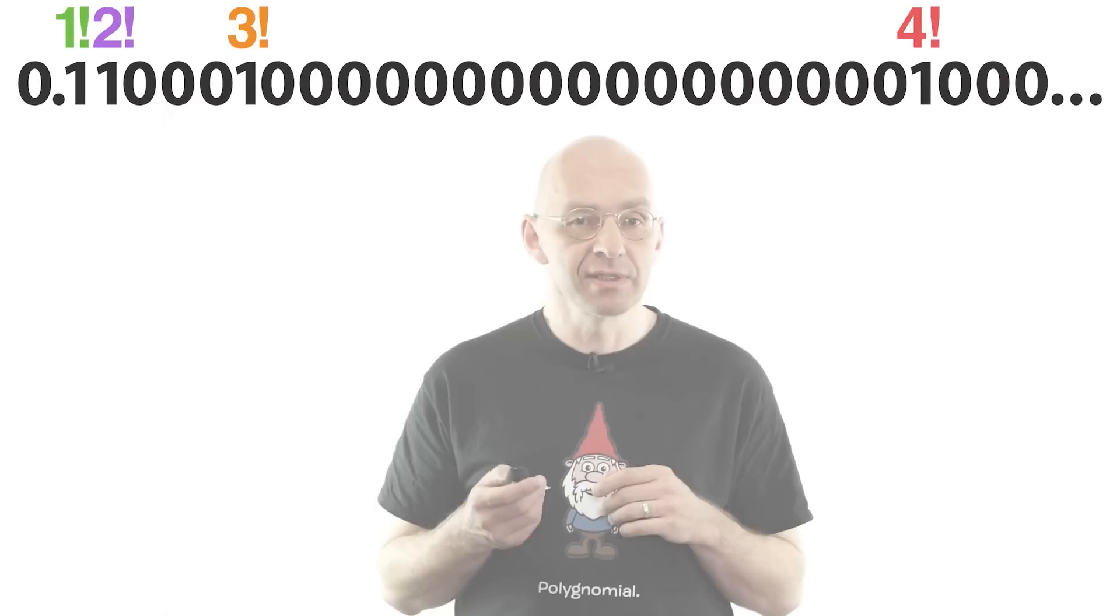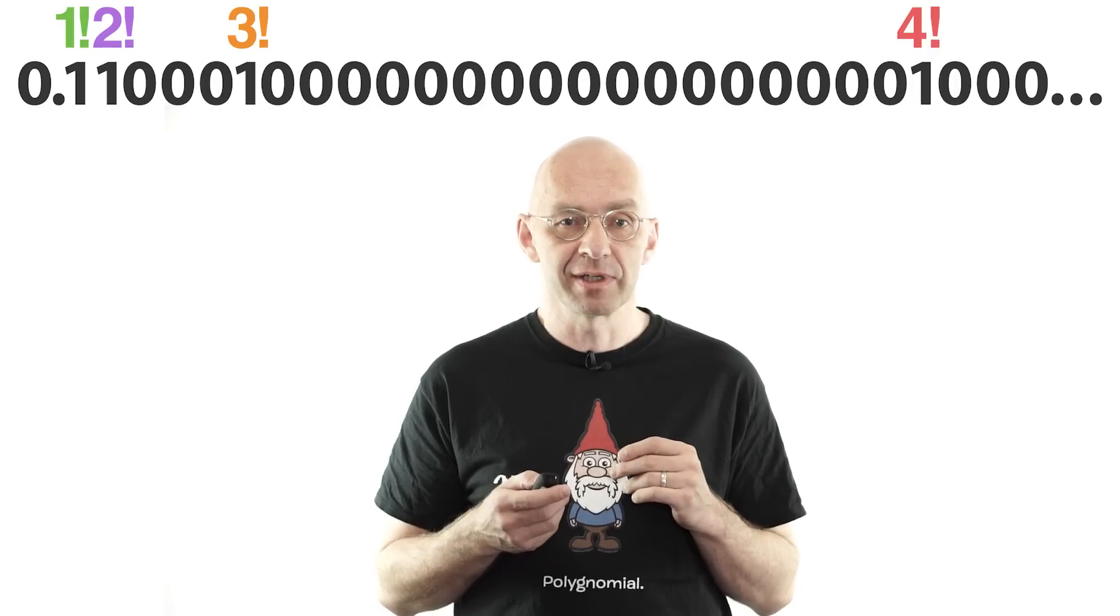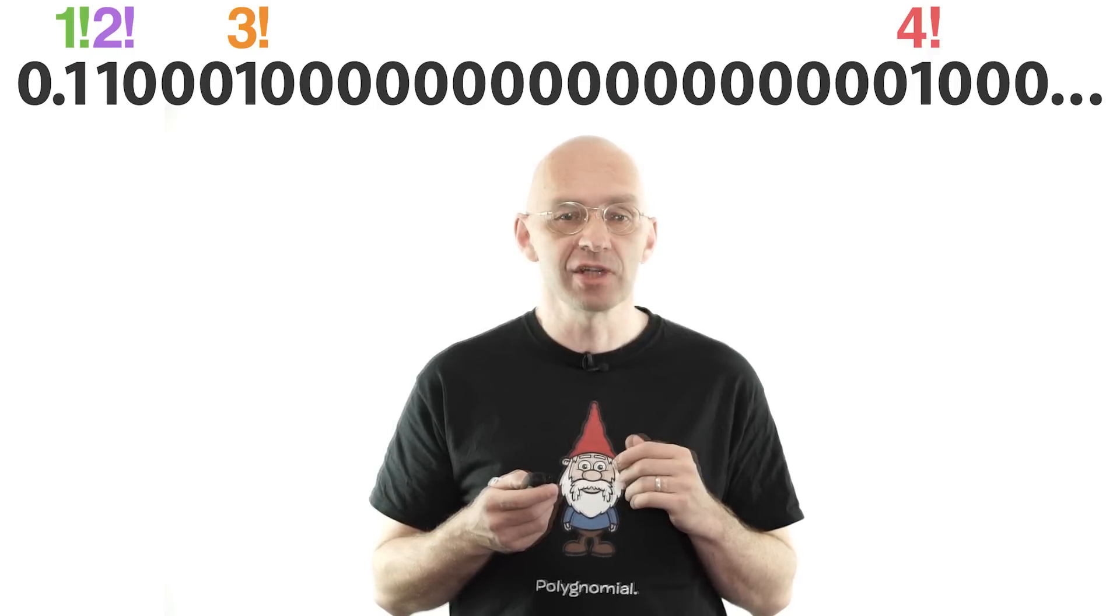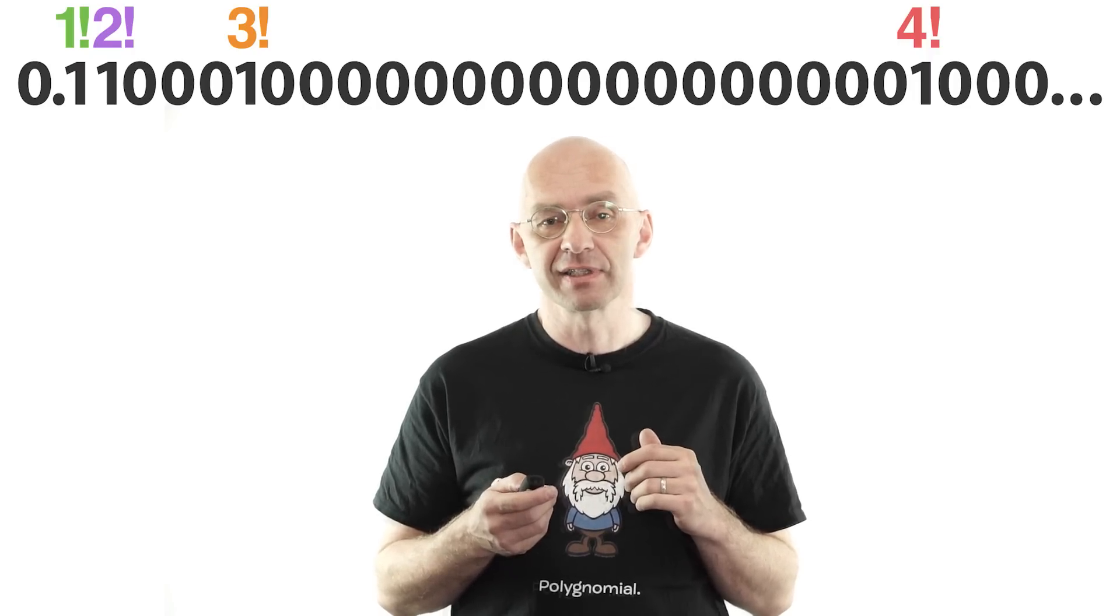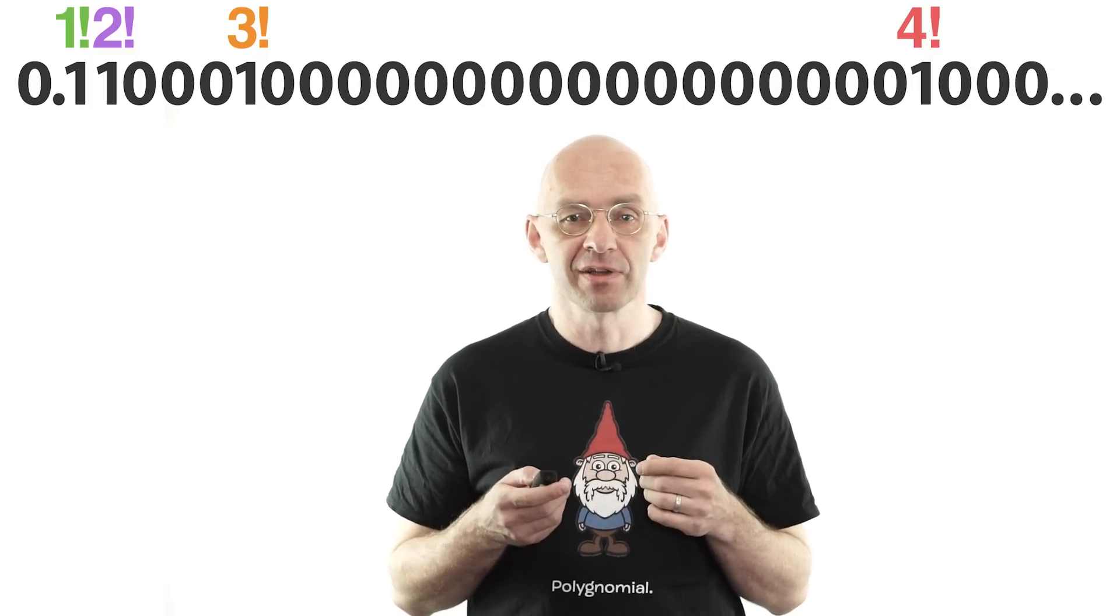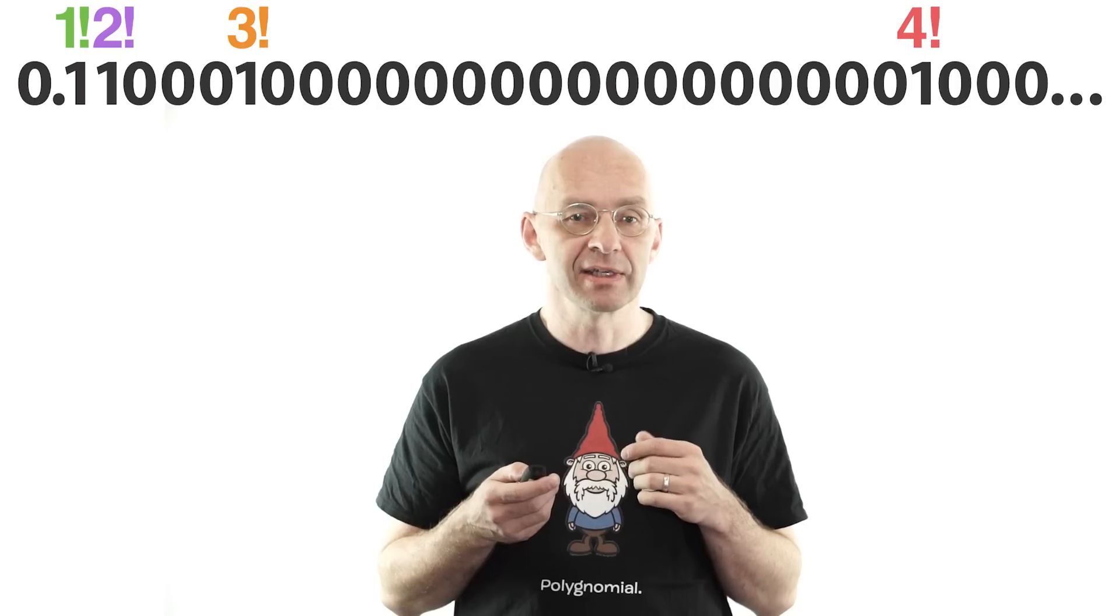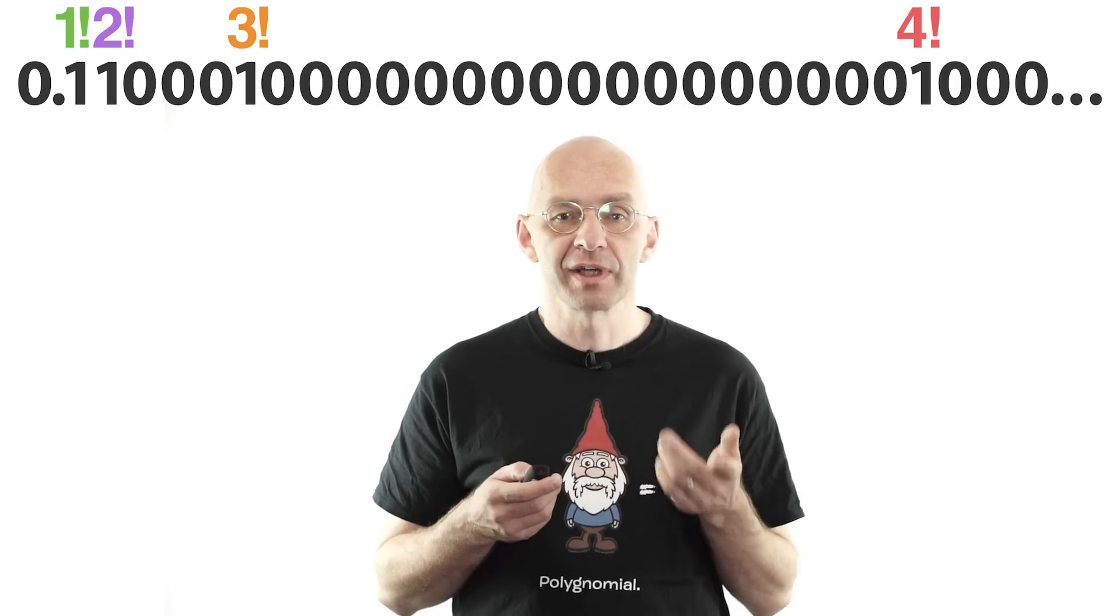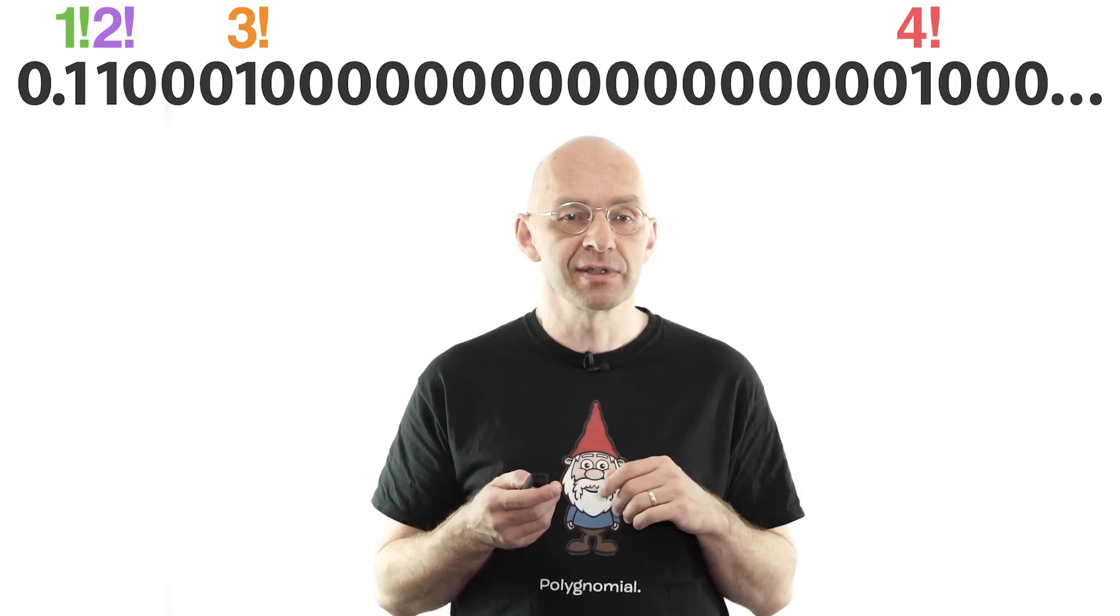Liouville's constant, discovered by the great French mathematician Joseph Liouville, just preceding Cantor's ideas, fits the bill. This number is really an ocean of zeros with isolated islands of ones at the one factorial, two factorial, three factorial, etc. digits.